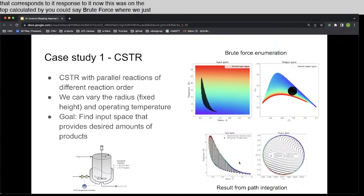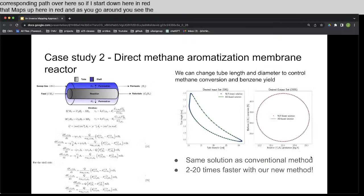On the bottom, you can see the result from path integration. And what happens there is we start at a point, we know what the derivatives are, and we integrate our way along the circular path, and that automatically traces out the corresponding path over here. So if I start down here in red, that maps up here in red, and as you go around, you see the change. And we can do this much faster because we only have to calculate along this path.